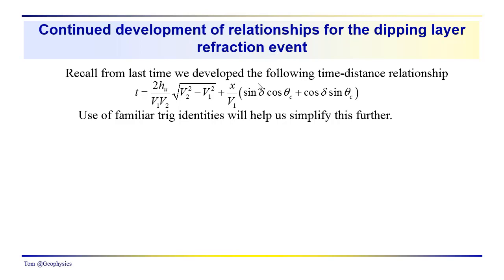You remember from last time that we developed this relationship for the time-distance relationship for the dipping layer refraction. We had an intercept over here. Notice that we have the thickness of the layer up-dip. This is the thickness of the layer along the line drawn normal to the layer back to the source. And then we have this complicated slope term here where we have the sine dip cosine theta critical plus cosine dip sine theta critical over V1.